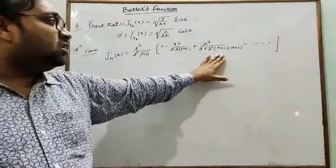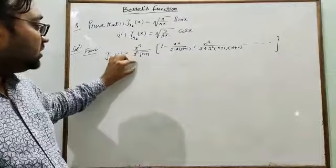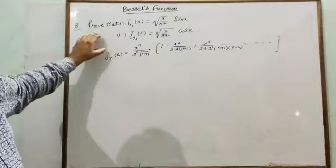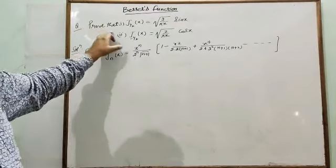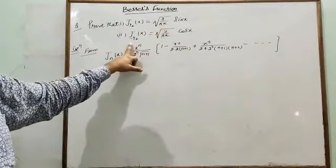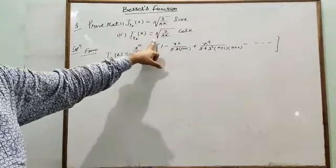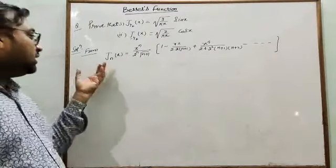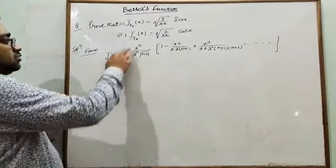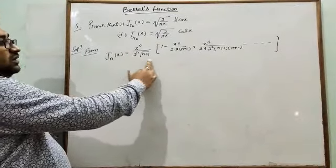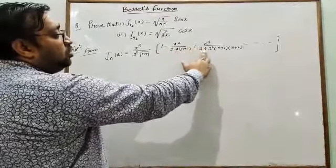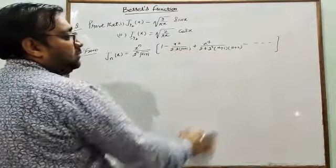In this particular case, a₀ is replaced by 1 over (2^n · Γ(n+1)). Now we take one problem: Prove that J_{1/2}(x) = √(2/πx) · sin(x), and J_{-1/2}(x) = √(2/πx) · cos(x). For this, we write Bessel's function in series form: J_n(x) = (x^n)/(2^n · Γ(n+1)) · [1 − x²/(2(2n+1)) + x⁴/(2·4·(2n+1)(2n+2)) − ···]. This is equation (1).